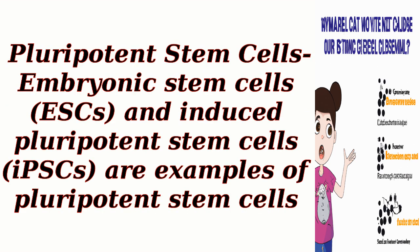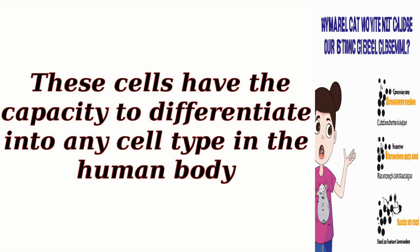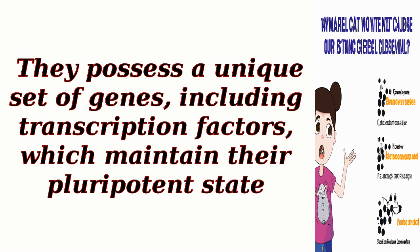Pluripotent stem cells — including embryonic stem cells (ESCs) and induced pluripotent stem cells (iPSCs) — are examples of pluripotent stem cells. These cells have the capacity to differentiate into any cell type in the human body. They possess a unique set of genes, including transcription factors, which maintain their pluripotent state.